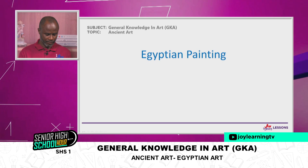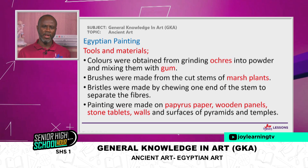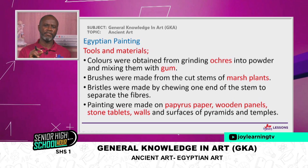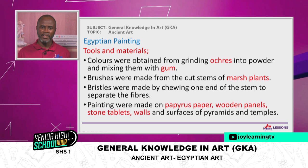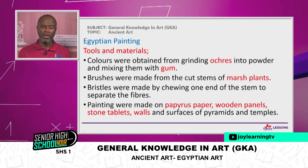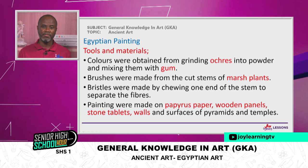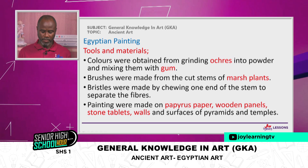So let's start from Egyptian painting. I am going to categorize painting into various areas so that you will understand how the Egyptians looked at their art. I'll start with the tools and materials. Colors were obtained from grinding ochres into powder and mixing them with gum. Brushes were made from the cut stems of marsh plants — Egypt is along the Nile River, and they got these marsh plants there. Bristles were made by chewing one end of the stem to separate the fibers. Paintings were made on papyrus paper, wooden panels, stone tablets, and on walls and surfaces of pyramids and temples.